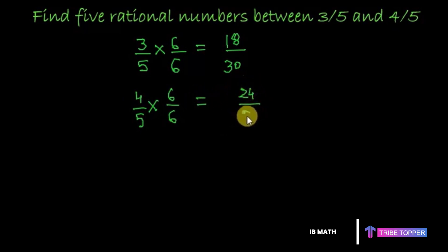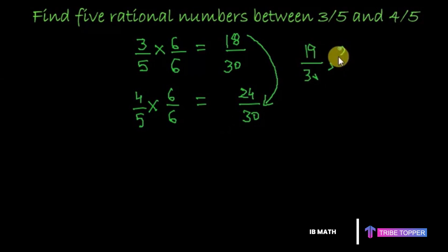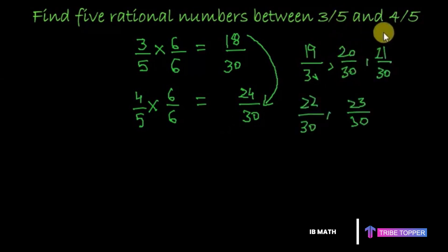It's quite simple to go from eighteen by thirty to twenty-four by thirty — you have five rational numbers in between: nineteen upon thirty, twenty upon thirty, twenty-one upon thirty, twenty-two upon thirty, and twenty-three upon thirty. All five of these numbers are rational and they lie between three by five and four by five.